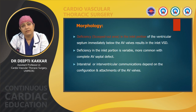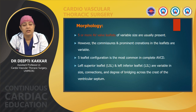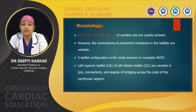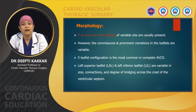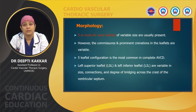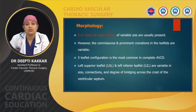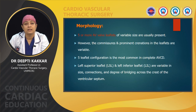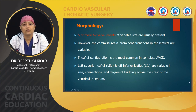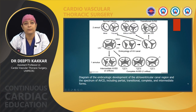There could be five or more AV valve leaflets of variable size; the commissures and prominent cremations in the leaflets are variable. The five-leaflet configuration is most common in complete AVCD. The leaflets are divided as left and right superior and inferior leaflets and the lateral leaflets. Based on the extent of bridging of the left superior and inferior leaflets across the ventricular crest, Rastelli proposed a classification of complete AVCD. This is the diagram showing the embryologic development of the AV canal region and the spectrum of AVCD.